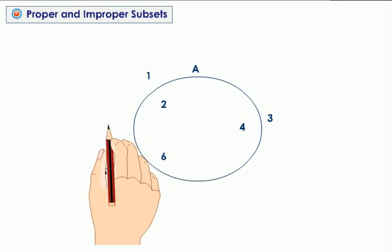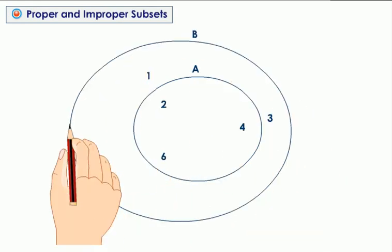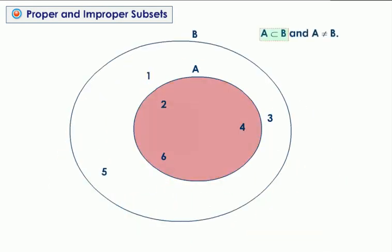Proper and improper subsets. A set A is a proper subset of B if A is a subset of B and A is not equal to B.